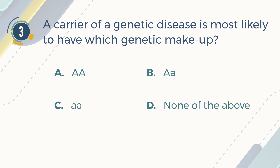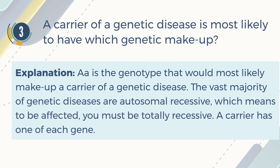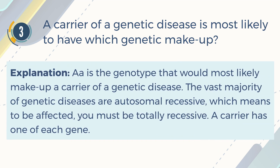The correct answer is B. Heterozygous genotype. Explanation: Heterozygous genotype is the genotype that would most likely make up a carrier of a genetic disease. The vast majority of genetic diseases are autosomal recessive, which means to be affected you must be totally recessive. A carrier has one of each gene.